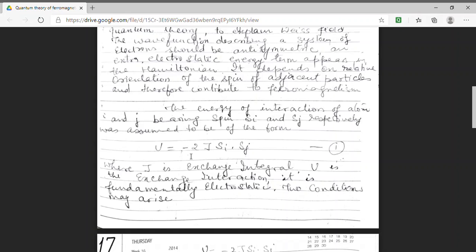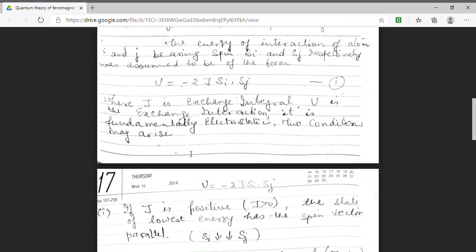Here, the two situations can arise. In the first case, if I have J to be positive, that is my exchange integral is positive. Now, the interaction energy must be negative for a stable condition.